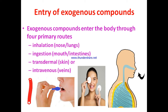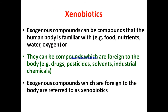Transdermal entry occurs through the skin, especially when the skin is oily — many lipid-soluble waste materials or toxins enter this way. Intravenous entry is through the vein. Some exogenous materials are familiar to the body, like food nutrients, water, and oxygen, while others are foreign — for example, drugs, pesticides, solvents, and industrial chemicals.